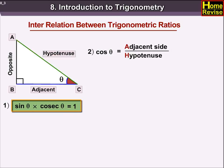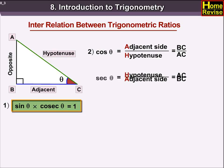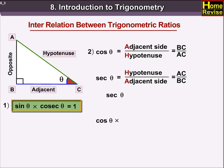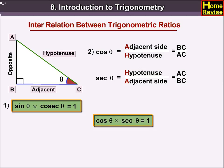Cos theta is equal to adjacent side upon hypotenuse, that equals BC upon AC. Sec theta is equal to hypotenuse upon adjacent side, that equals AC upon BC. Now, cos theta into sec theta is equal to BC upon AC into AC upon BC, which is equal to 1. Therefore, cos theta into sec theta is equal to 1.